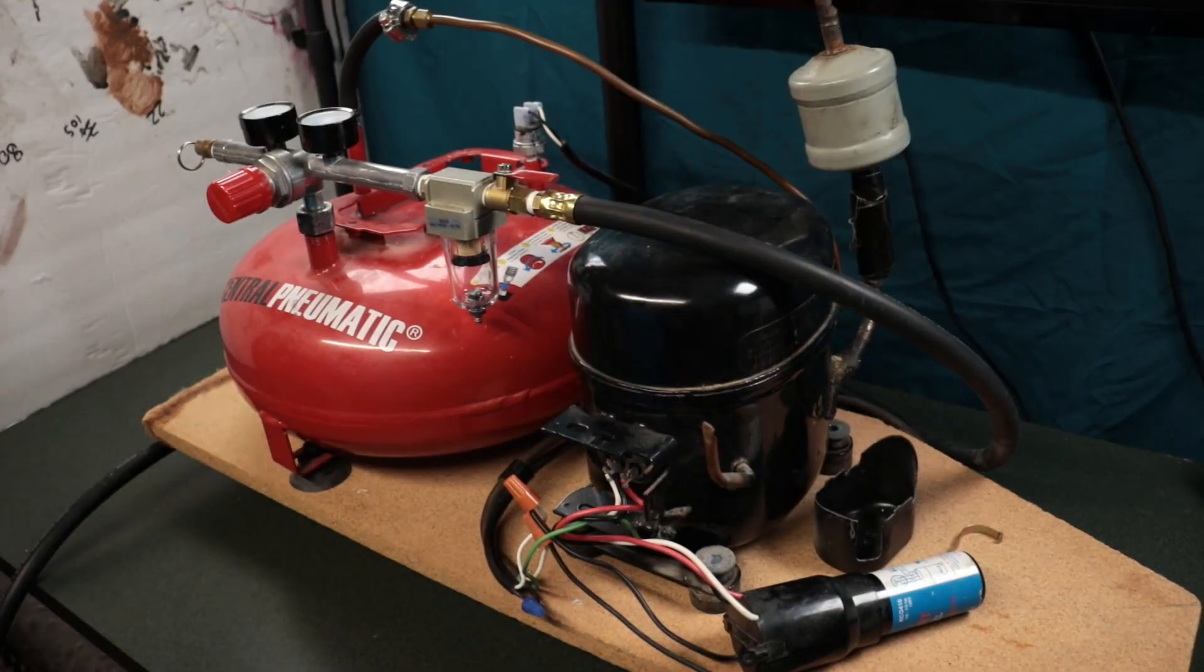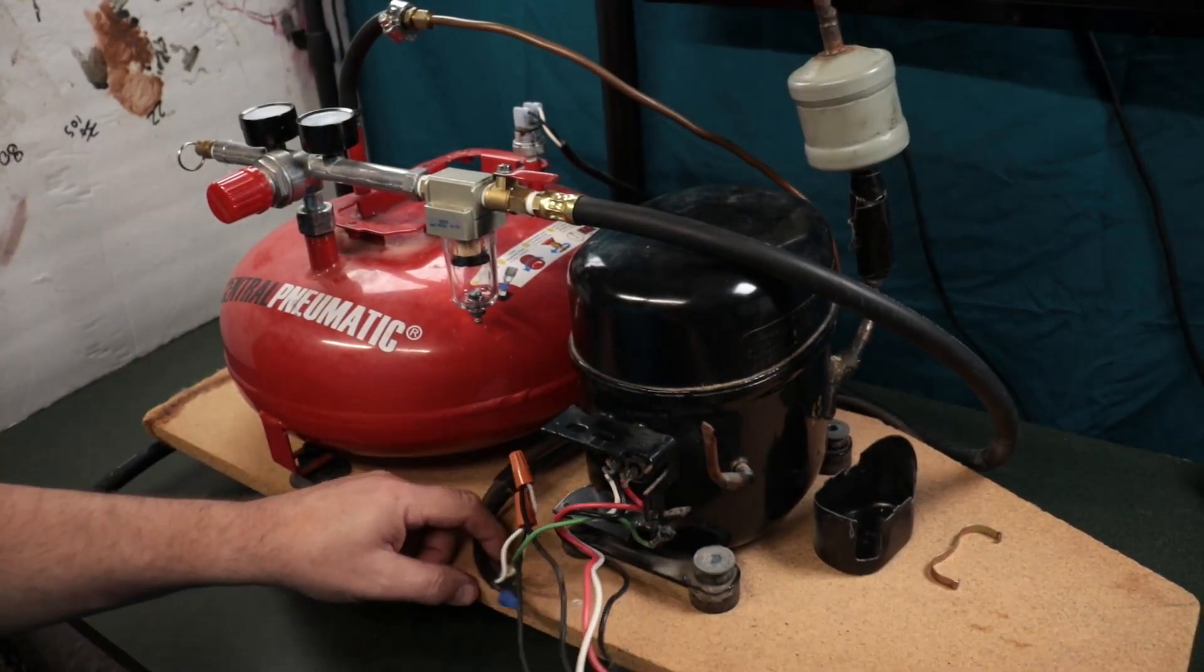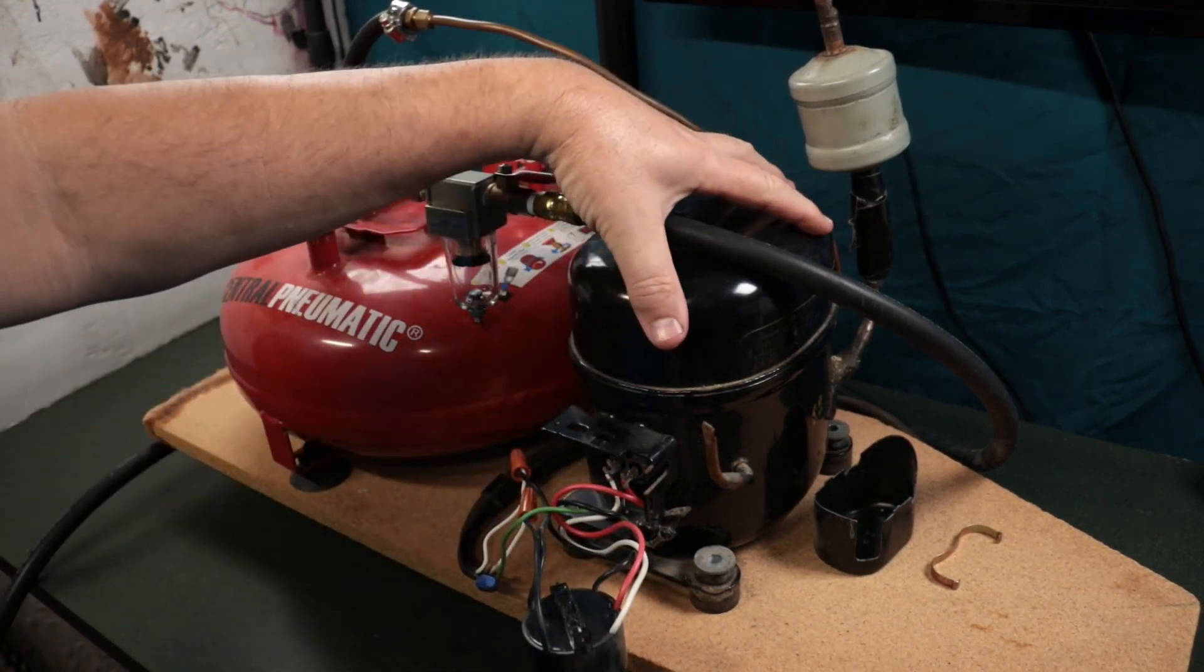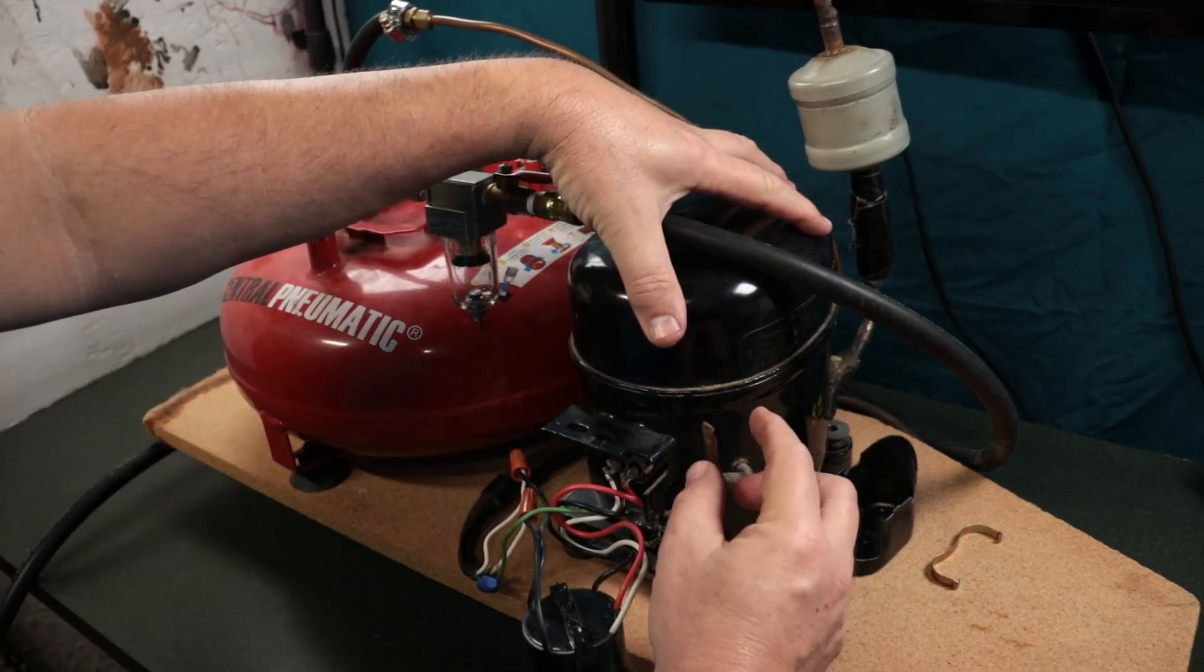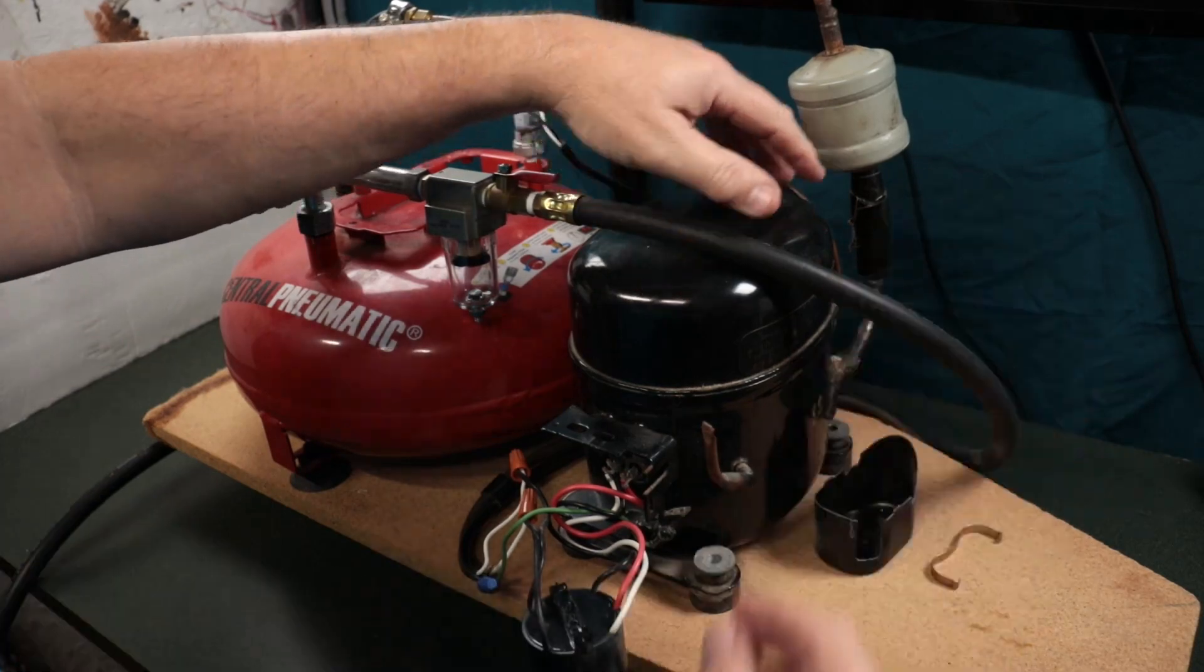Okay, so we're gonna get right down to it. What you have here is your refrigerator compressor. It's gonna have two copper lines on the back.